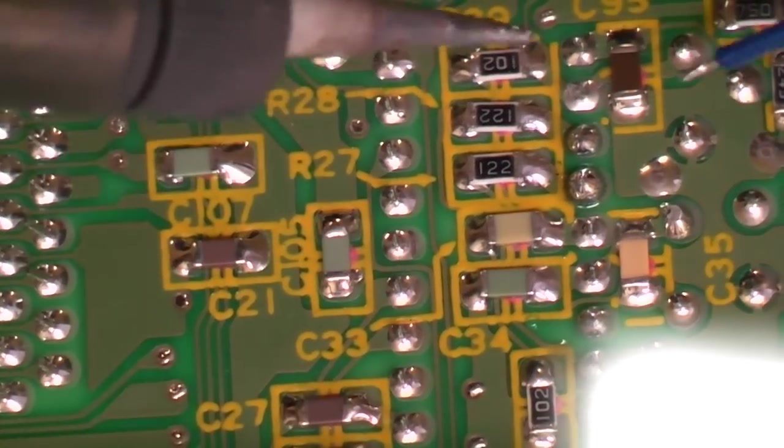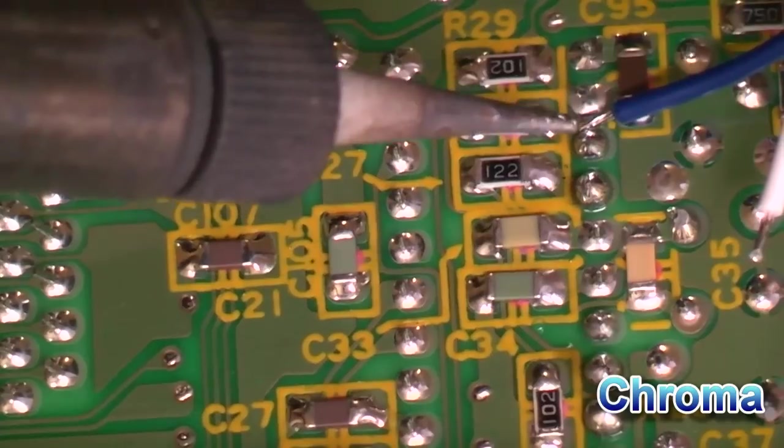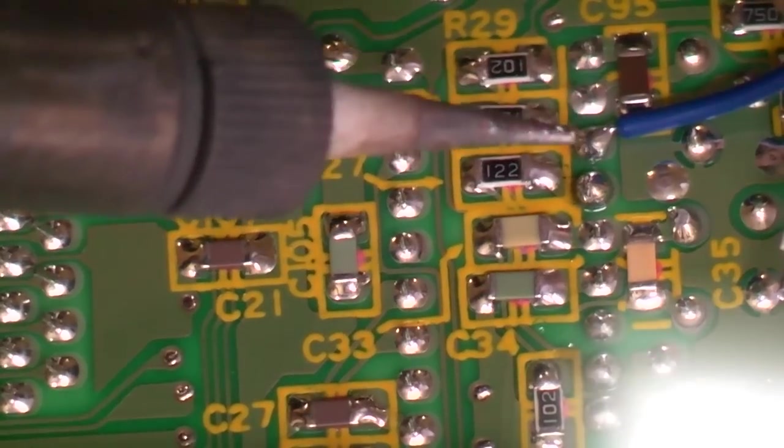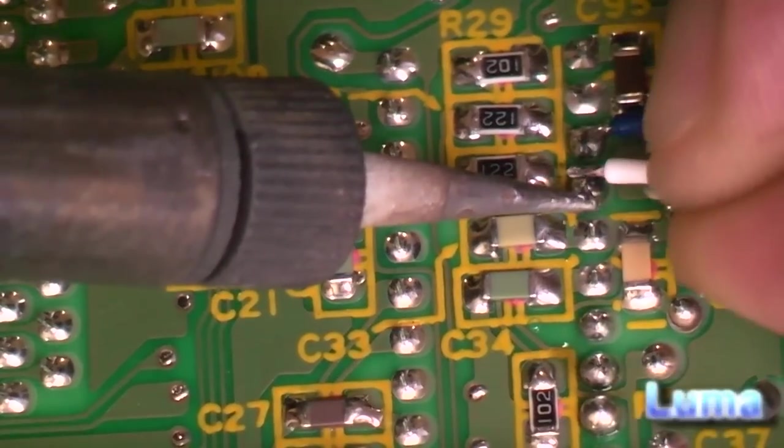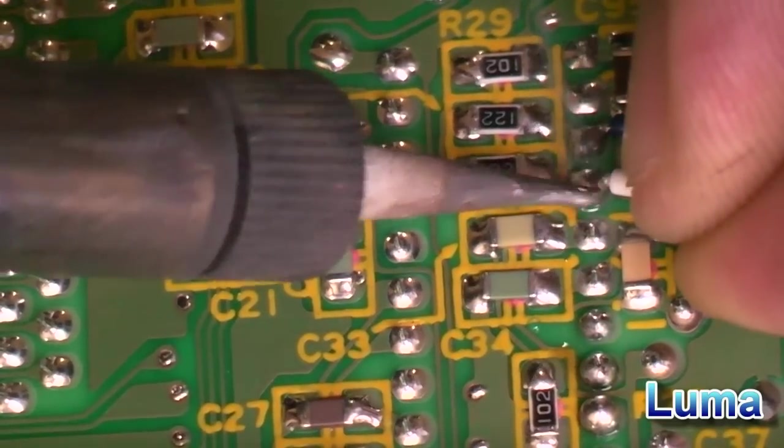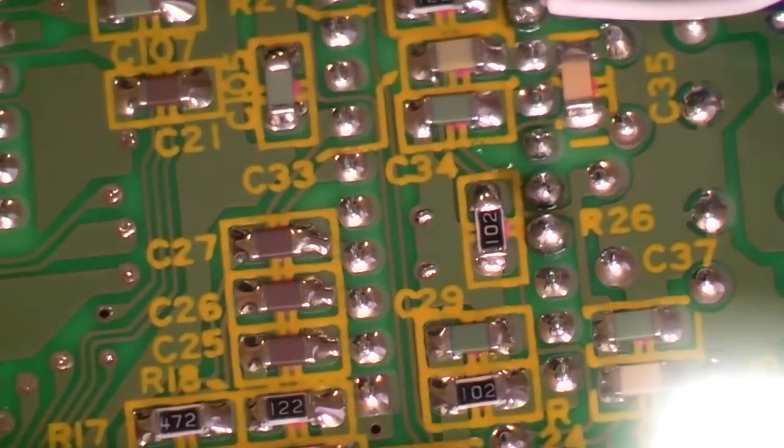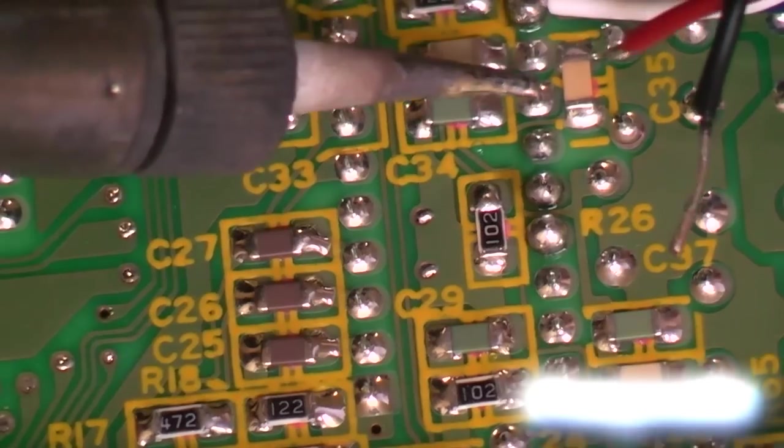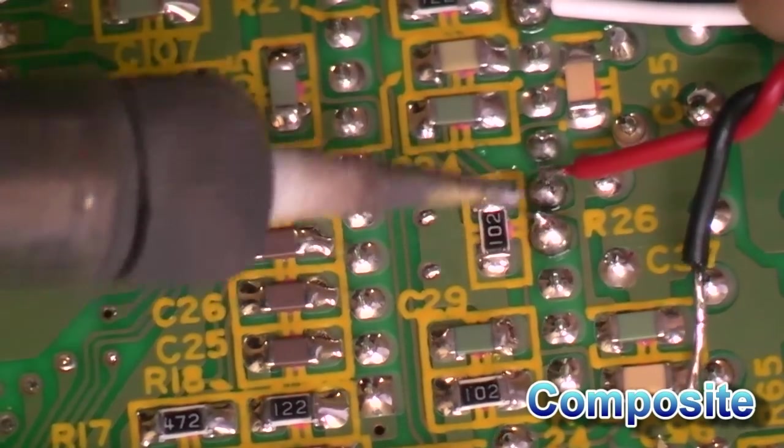So we'll flip it over and find it. Counting along, 13, 14, 15 is what we use for our chroma, so I'll just solder that on there. Pin 16 is what we're going to use for our luma.